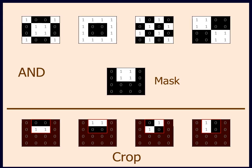In image processing, the mask performs the crop function. The result will only consist of the pixels of the original image that correspond to 1s in the mask.